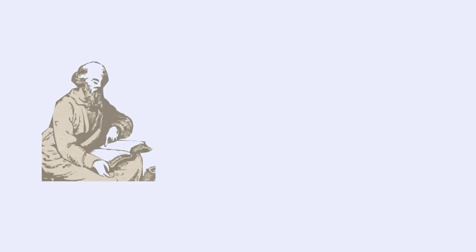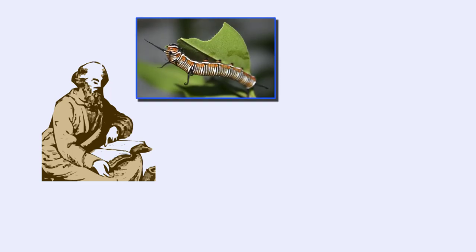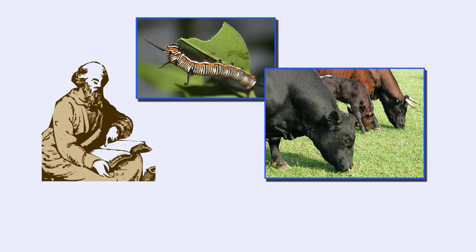The concept that some organisms can manufacture their own food was not an intuitive idea to the scientific thinkers of the 17th century. Animals could easily be observed eating various foods, a type of nutritional acquisition known as heterotrophy. But how did plants get their food?